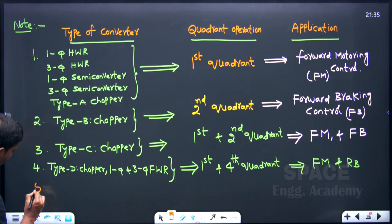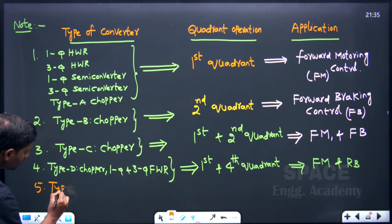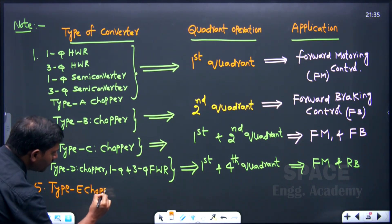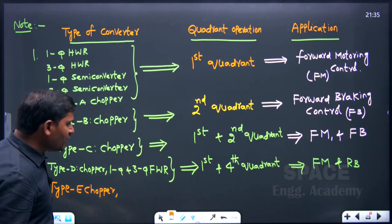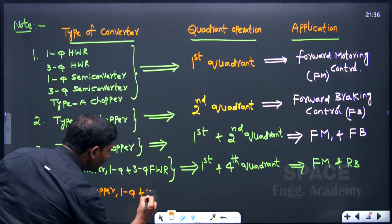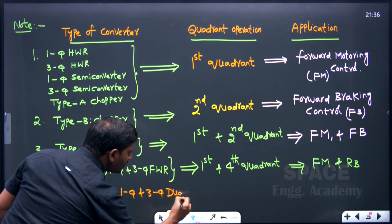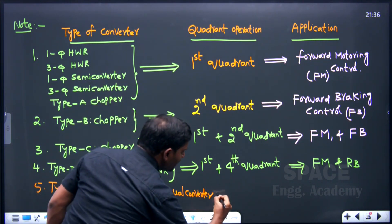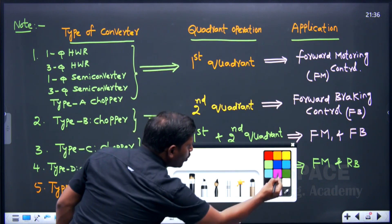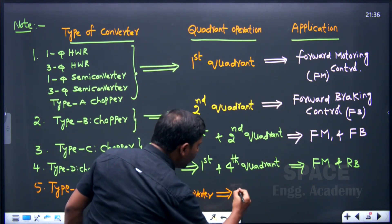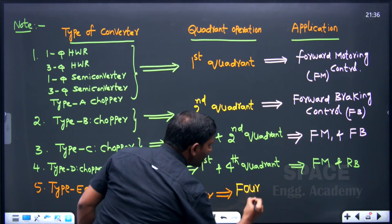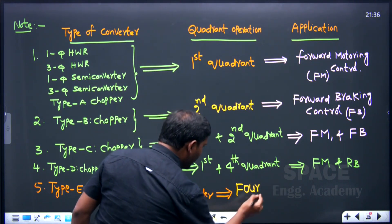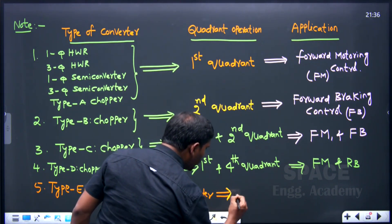The fifth one is Type E chopper, along with single phase and three phase dual converters. These are operated in all four quadrants — not just the fourth quadrant, but all four quadrants. You have to write: it is operated in all four quadrants.